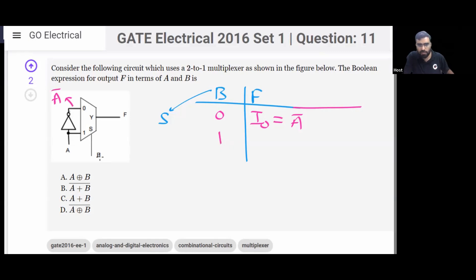And if you put B equal to one on the select line, your output will be I₁, that is same as A. So your equation will be: when B is zero, function value is A̅; when B is one, function value is A.